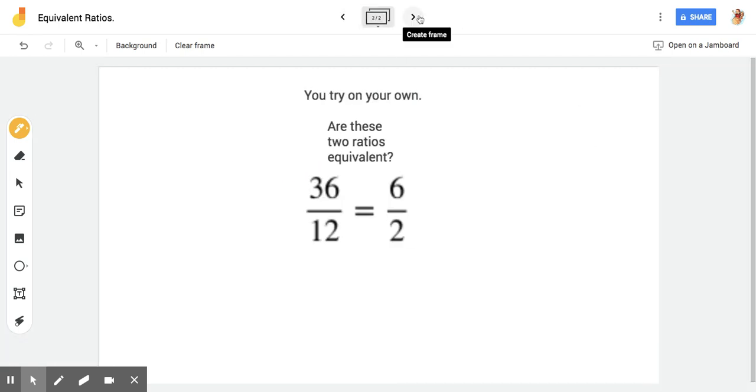I'm just going to have you go ahead and try this out on your own by hitting pause and try it out. Are these two ratios equivalent to each other? 36 to six. I think to myself, how did 36 turn into six? I know that 36 divided by six gives me six.